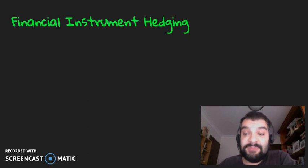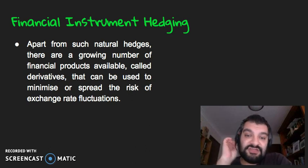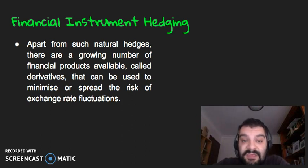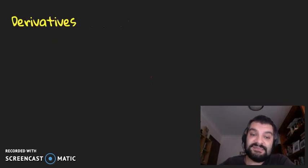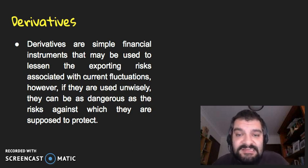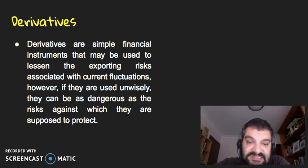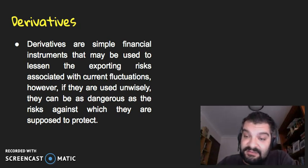Now let's look at financial instrument hedging. Apart from natural hedges, there are a growing number of financial products available called derivatives that can be used to minimize or spread the risk of exchange rate fluctuations. In a nutshell, derivatives are financial instruments used to lessen the exporting risks associated with currency fluctuations. However, if used unwisely, they can be just as dangerous as the risks they're supposed to protect against — you can actually end up losing instead of gaining.